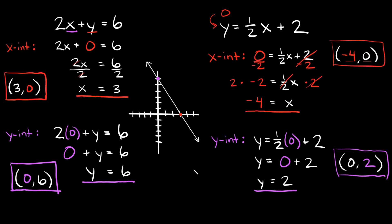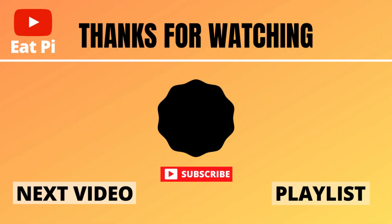If you want to graph this, draw a graph. The x-intercept is at negative 4 comma 0 — go back negative 1, 2, 3, 4, right there. The y-intercept is at 0 comma 2 — that's 1, 2, right there. Draw a straight line between the two points, and this line is the graph of y equals one-half x plus 2. If you found the video helpful, leave a thumbs up below. Any questions or other examples, let me know in the comments. Check out the playlists attached and I'll see you there.